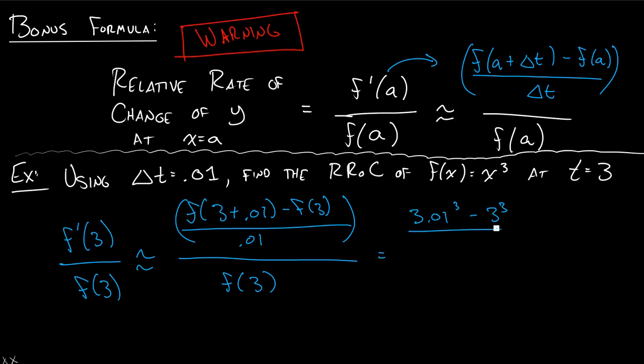We can plug in 3.01³ minus 3³ divided by 0.01, divided by 3³, and we will get 1.0338, really close to one. It actually would be one if we didn't have to use this approximation. Just make sure you polish up on some of these problems before you take the midterm.